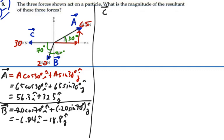All right, and our C vector is all in the negative x direction, so that is just going to be a negative 30 I.